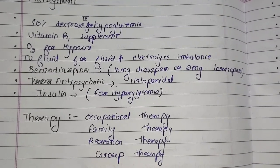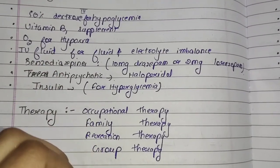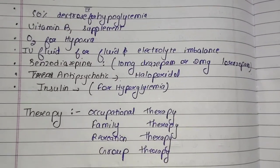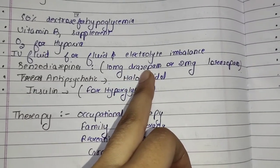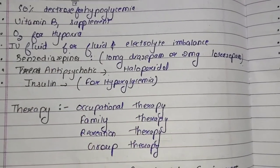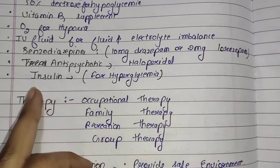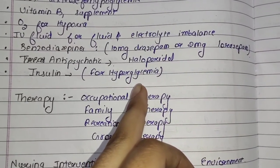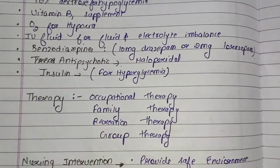Some drugs are used to treat delirium. The first one is benzodiazepines, such as diazepam 10 mg and lorazepam 2 mg. Next, antipsychotic drugs such as haloperidol are used. Additionally, insulin can be provided to the patient for hyperglycemia — when the blood sugar level in the body increases, the patient is given insulin.